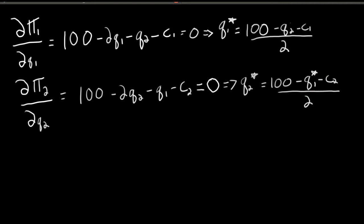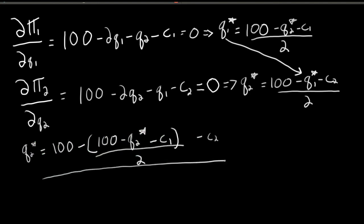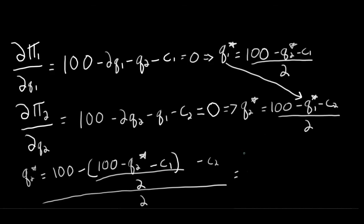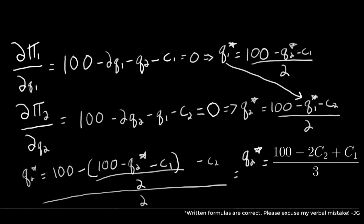Now, to solve, all we have to do is plug this into here. And then we can get the Nash equilibrium quantities. So let's do this. Okay, so after plugging in, we get this equation. We see there's a Q2 star on both sides, but now all we have to do is solve for Q2 star. So we can go through and solve and we get Q2 star is equal to 100 minus C2 plus 2C1 over 3. So this is the Nash equilibrium quantity for player two.